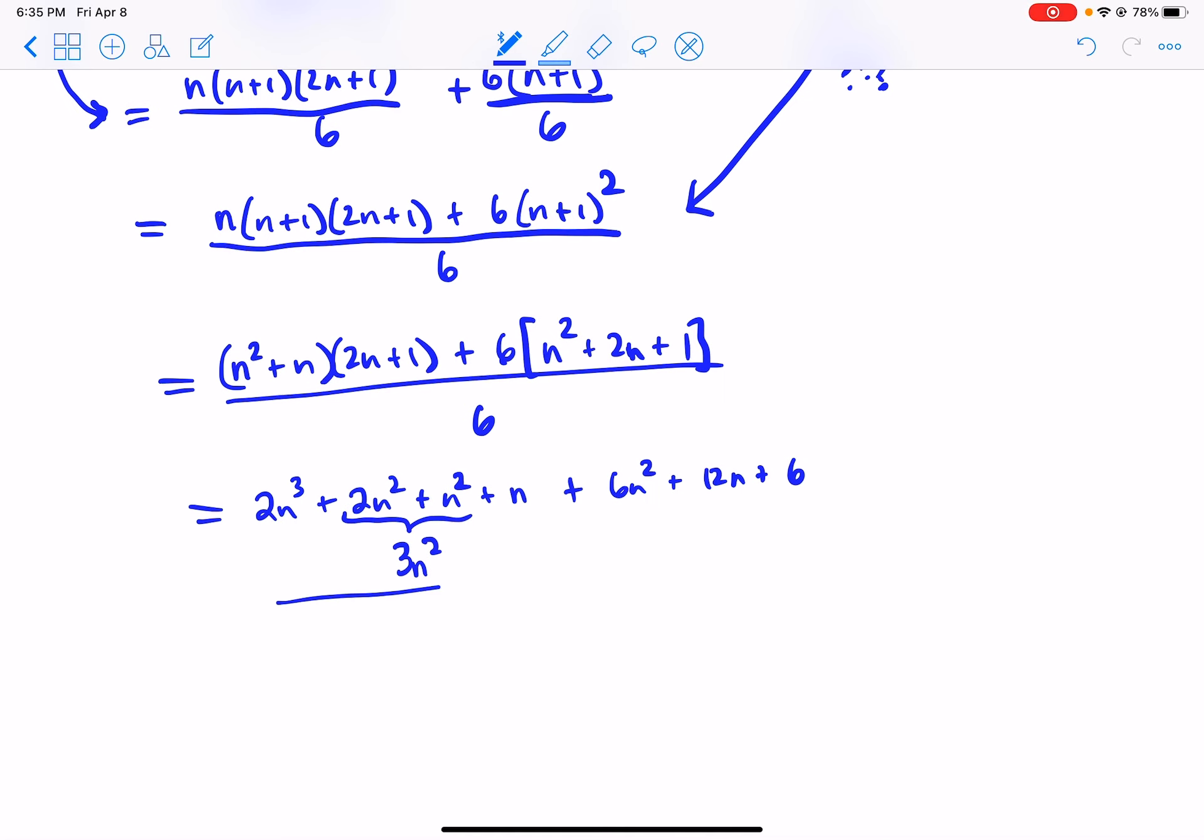And let's just collect everything. I guess this is all over 6, but how many n to the thirds? 2n to the thirds. How many n squareds? We have 3 and 6 is 9n squareds. How many ns? We have 1 and 12 is 13n's. And how many n to the zeros? We have 6. That's it.